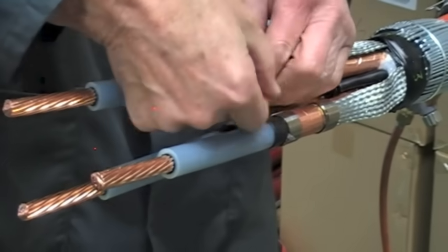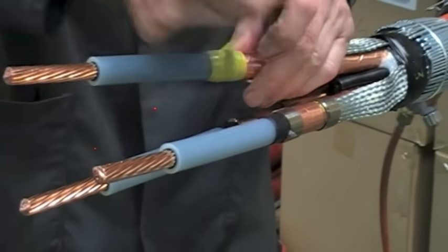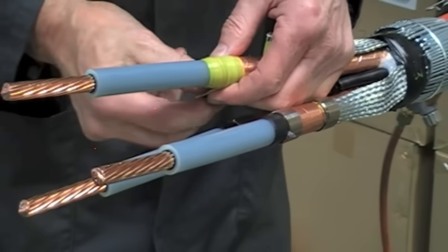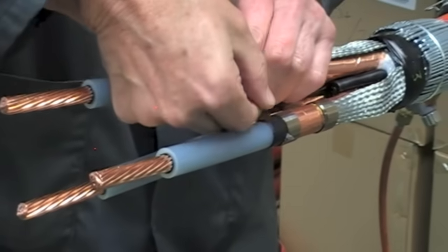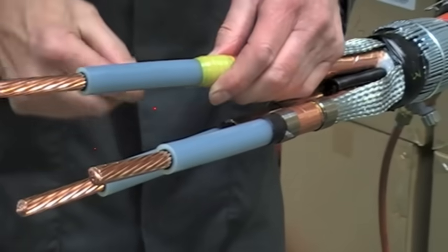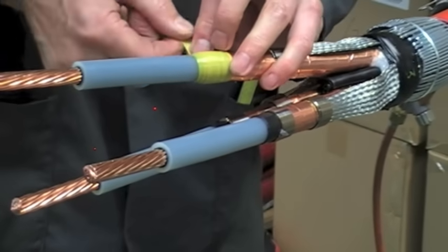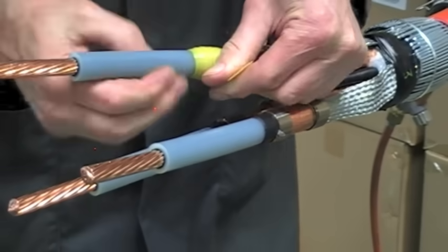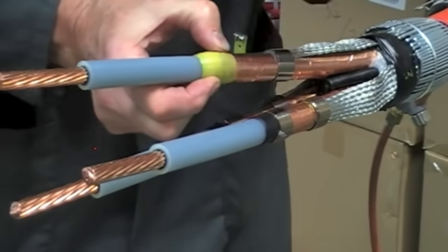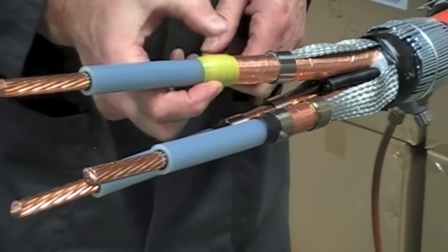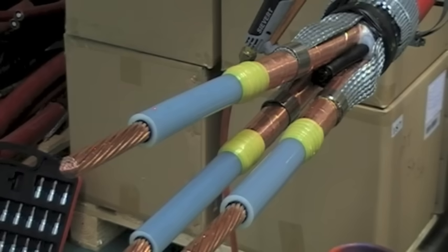This mastic tape will also provide a moisture seal when the stress control tubes are fitted next.